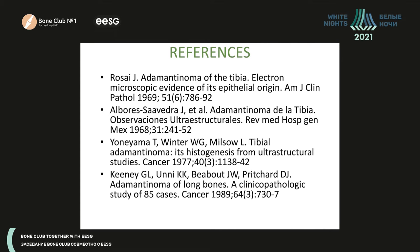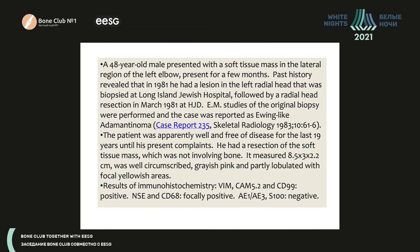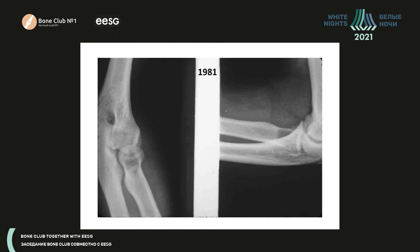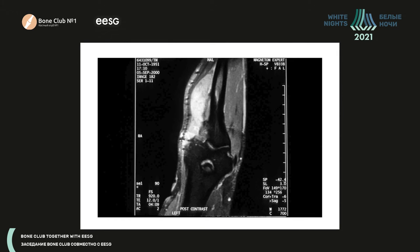In 1980, the number of cases at the New York Bone Club was a three-digit number. By the year 2000, it was a four-digit number. This is a description of the same patient followed over 20 years at the same New York Bone Club — just a reminder of how this tumor looked initially, and how it looks 20 years later.